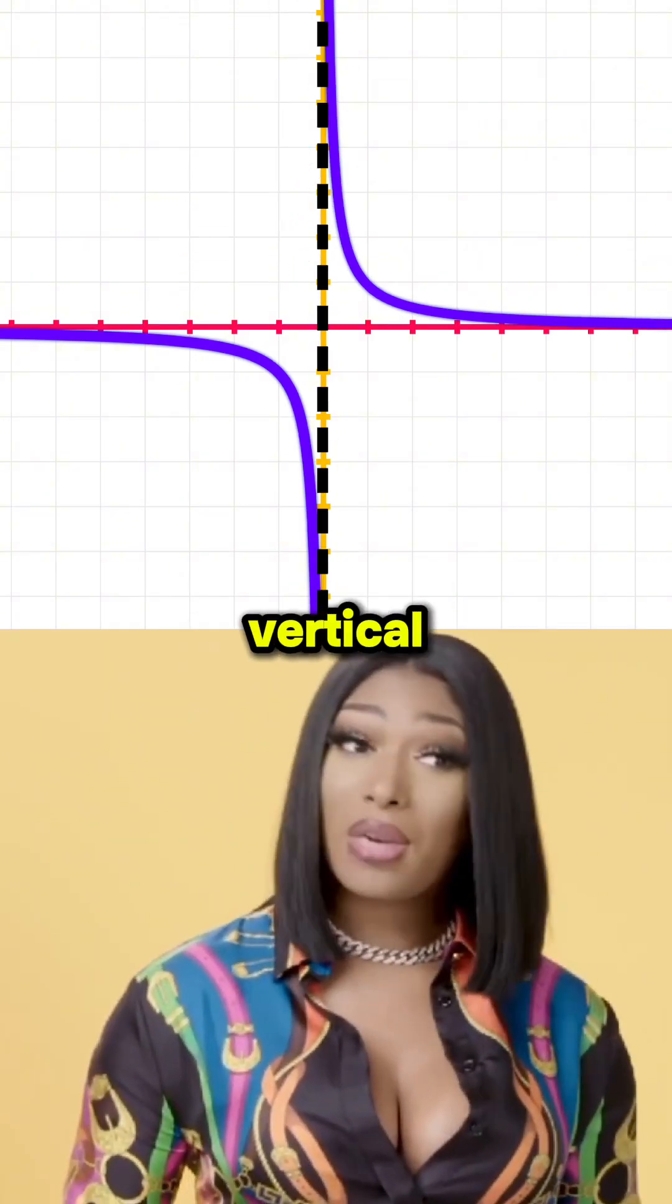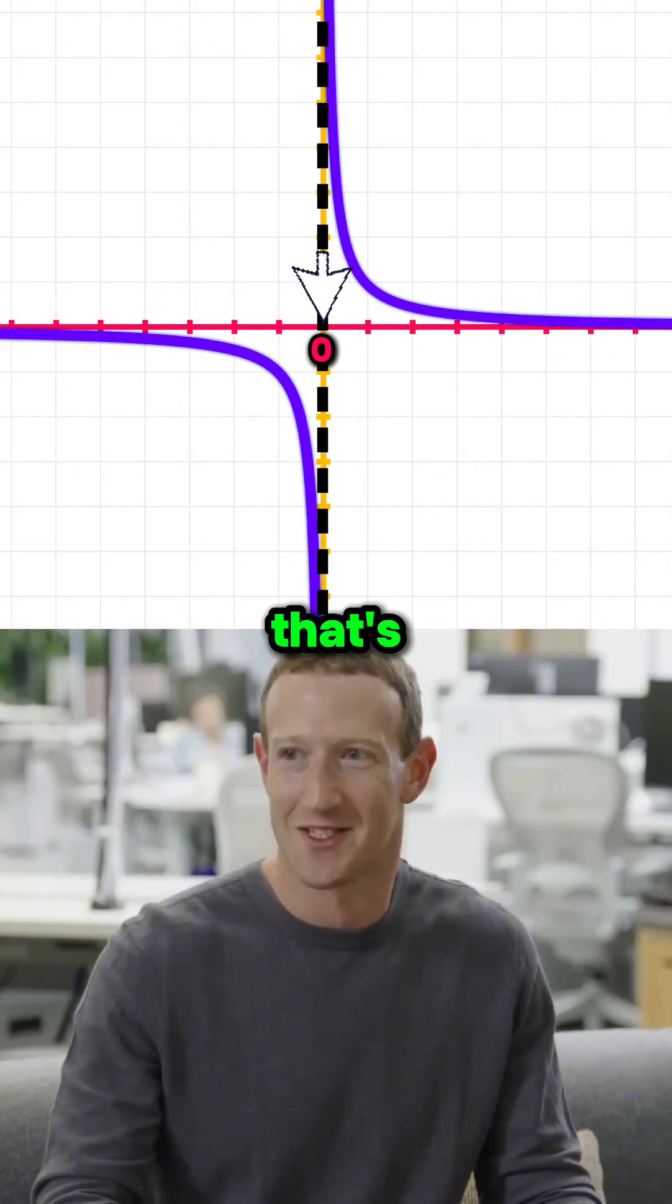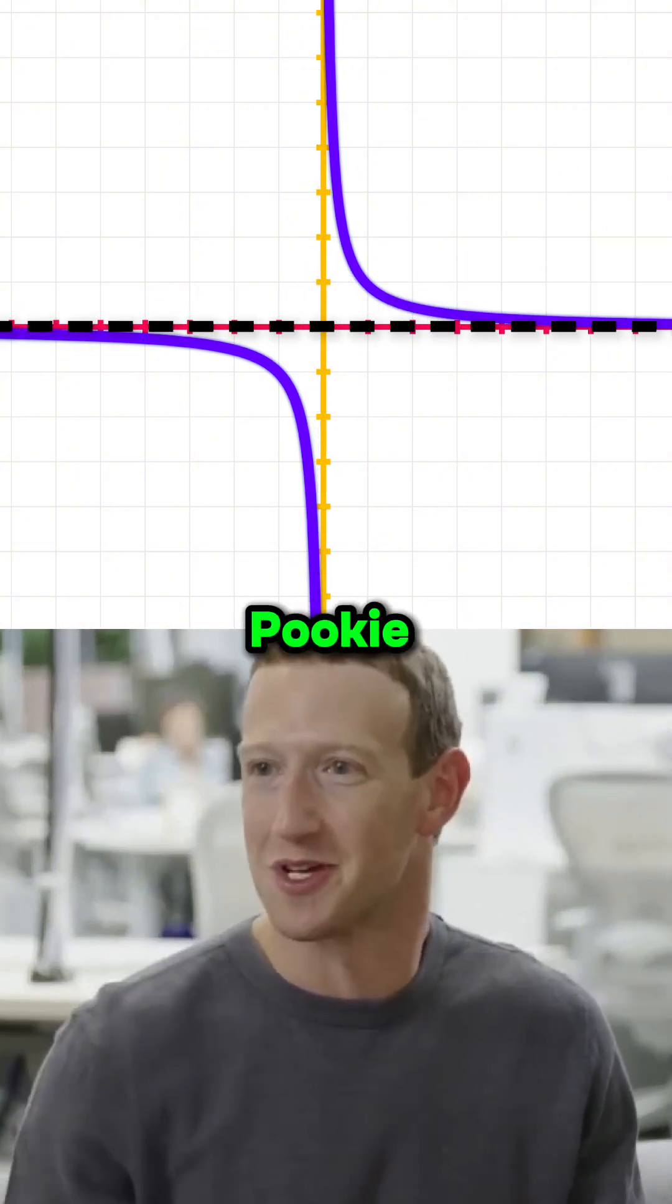Yeah, we got a vertical asymptote at x equals 0. But that's not the only asymptote this function has. Ain't that right, Pookie Bear?